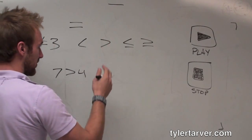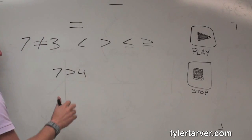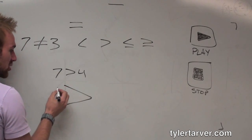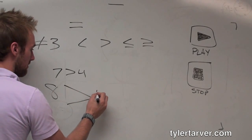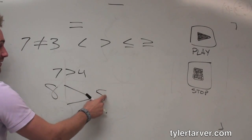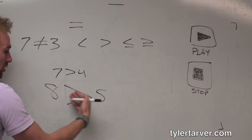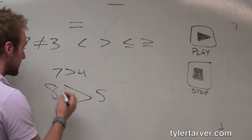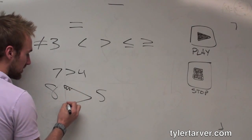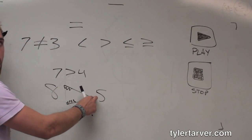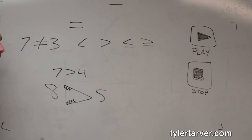Just remember that the open part is towards the bigger number. 8 is greater than 5. It doesn't matter which way it's facing as long as the open part is towards the bigger number. A lot of people say it's like an alligator - he wants to eat the most amount of food, so he's going to be towards the bigger one. That's the smaller end towards the smaller number.